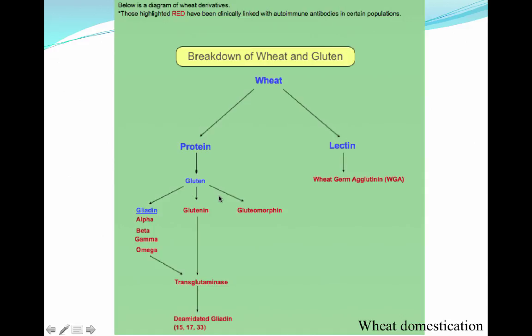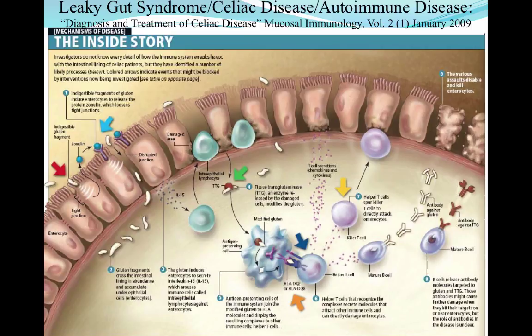Wheat produces certain types of protein, and one of those proteins is gluten. There are several different forms of gluten that can be produced — three of which are shown in the center of the slide. Depending on which form of gluten we get, that really relates to whether our body can be tolerant to it or not. Because we've bred some species of wheat to be more productive, that hasn't kept up with the integrity of our gut, leading some people to develop celiac disease, which is an autoimmune disease.